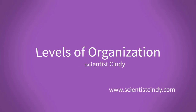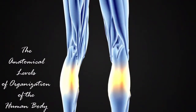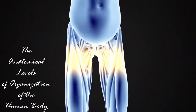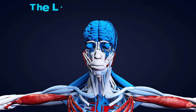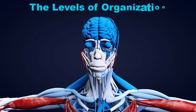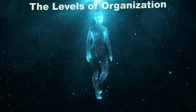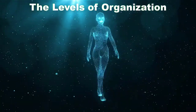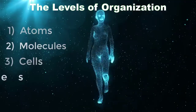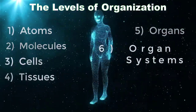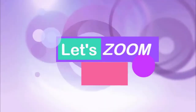Let's explore the anatomical organization of the body. The body is made up of anatomical levels that increase in their complexity, from the smallest most fundamental units of our being all the way up to the entire organism as a whole. The major levels of organization, from the simplest to the most complex, are atoms, molecules, cells, tissues, organs, organ systems, and the human organism.